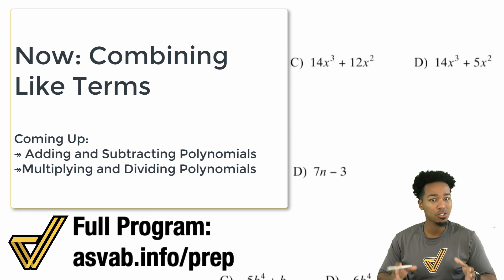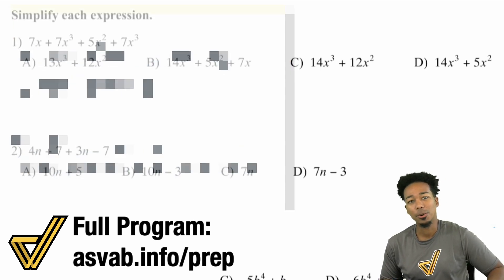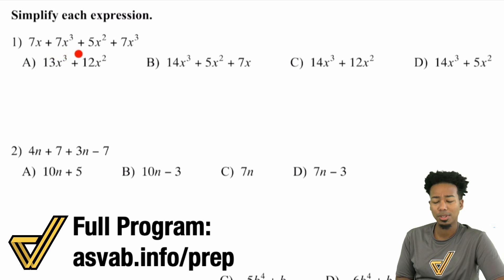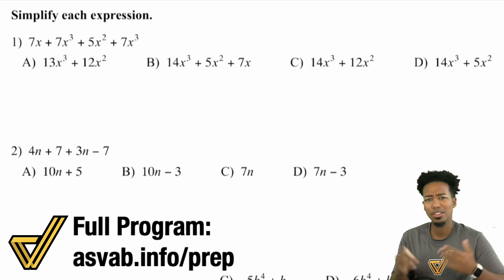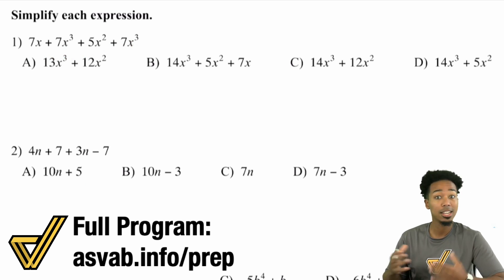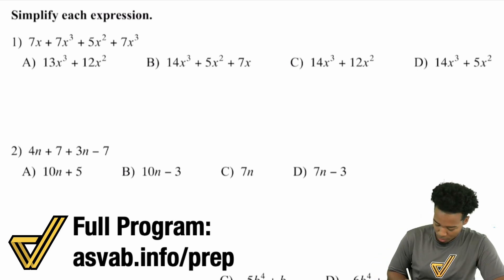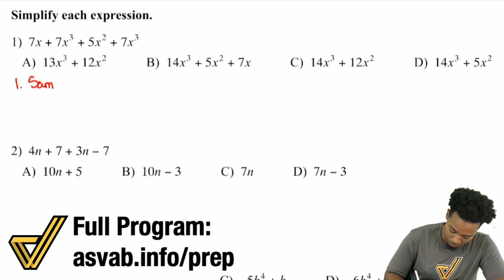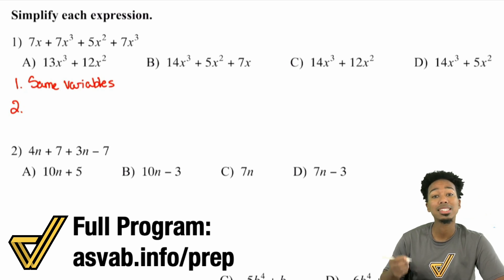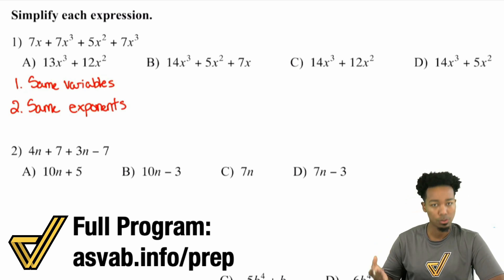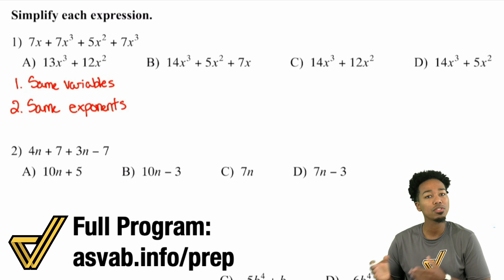So again, combining like terms. I've got three different things to show you here, so stay tuned all the way through. For two terms to be like terms, there are two things that need to happen. Number one, we need to have the same variables. Not only that, we also need the same exponents on those variables. A lot of people think you just need the same variables, but you need the same exponents as well.